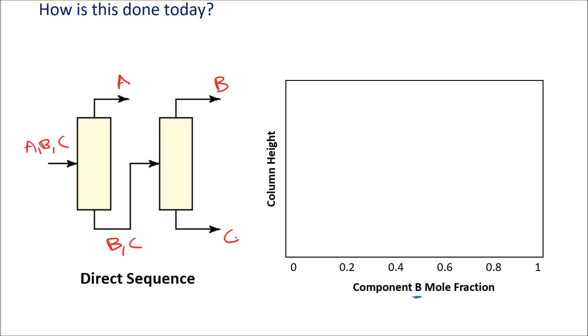But there is a challenge with this approach, and it has to do with thermodynamics and inefficiencies associated with these two columns in sequence. So let's start by looking at the second column here. If we were to draw a plot of component B mole fraction versus column height, that would look something like this for column two, which is what you might expect.